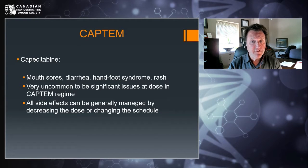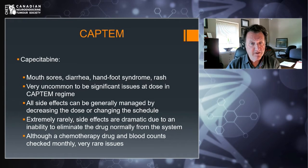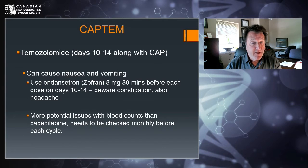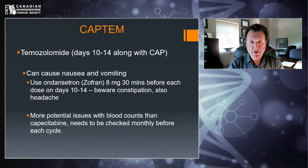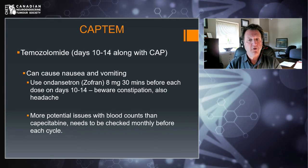All side effects can be managed by decreasing the dose or changing the schedule. Extremely rarely, some patients are unable to eliminate the drug from their system and are at risk of severe toxicity — though in my experience I've not seen it on this regimen. The temozolomide component can cause nausea and vomiting, so I always prescribe Zofran or ondansetron — a very strong anti-nausea medication — taken half an hour before each dose for the last five days. Unfortunately, it can cause constipation and headache, and it's important to remember those can be from the Zofran itself, not necessarily the chemo. Blood counts are always checked monthly on this regimen.